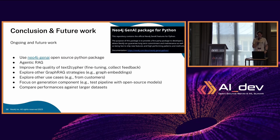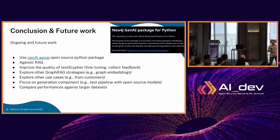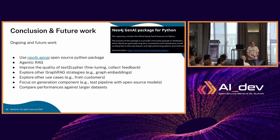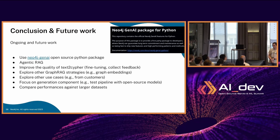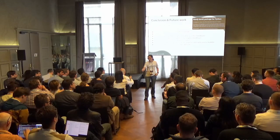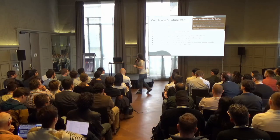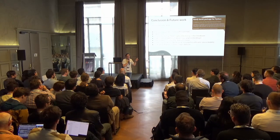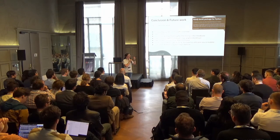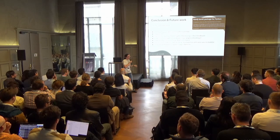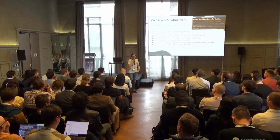Question: Which LLM have you used for computing the RAGAS metrics, and if you tested different LLMs, were the results the same or different? At the moment, the results shown have been generated using GPT-4o. Exploring other LLMs is also part of our to-do list — it's work in progress.